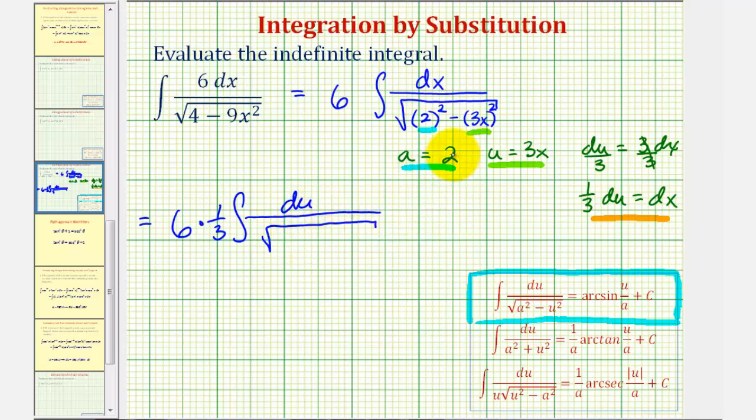a squared would be 2 squared or 4, which is correct. And u squared, since u equals 3x, would be 9x squared, which is also correct. Now we can apply the integration formula.